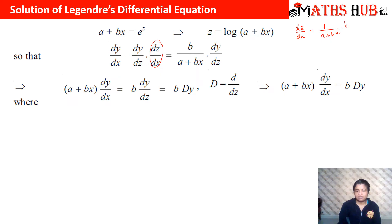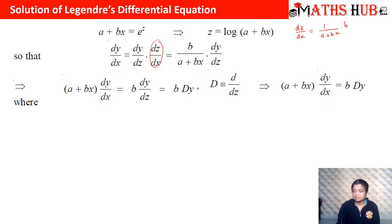Now converting to symbolic form, we use capital D for d/dx and theta (or capital D) for d/dz. So (a + bx) · dy/dx = b · θy, where θ denotes d/dz.